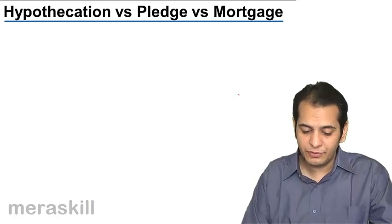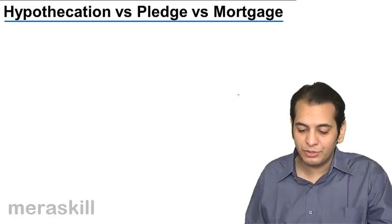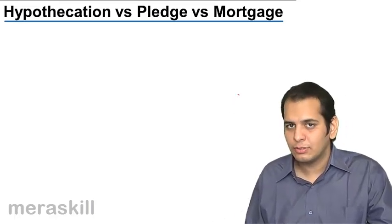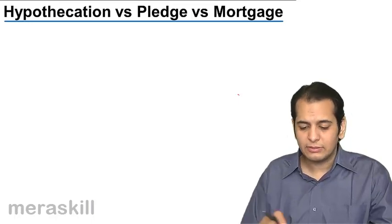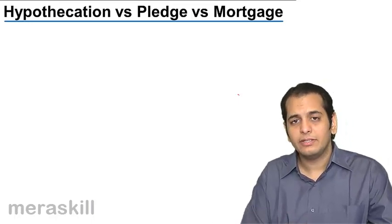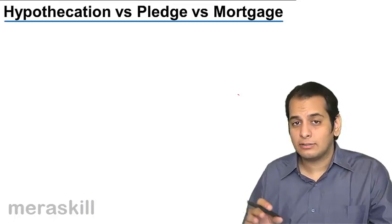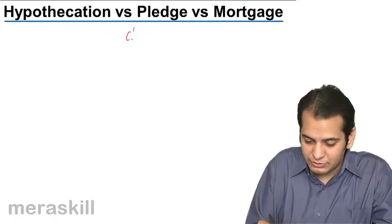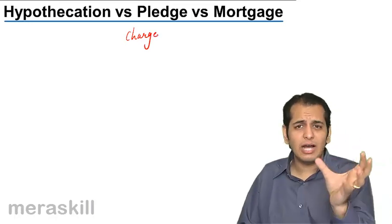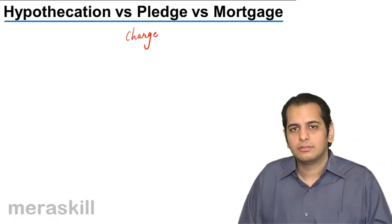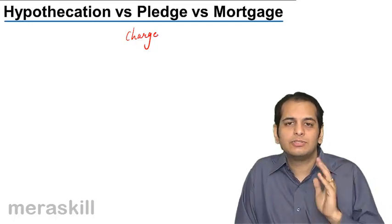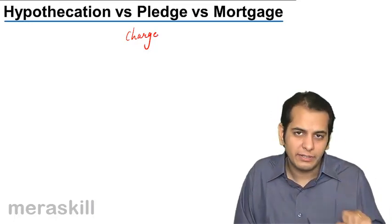Let us understand the difference between hypothecation, pledge, and mortgage. All three of these are types of charges. A charge is an impediment, a hurdle, an obstruction in your title.